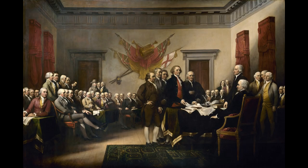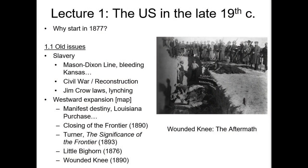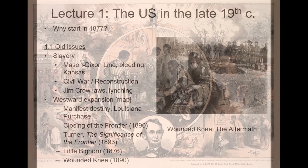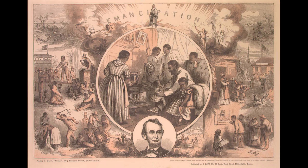Why 1877, you might ask? Why not 1876, which would have been the first 100-year anniversary of the Declaration of Independence? Well, there's a reason for it — it is the end of what is called Reconstruction in US history, meaning the period after the Civil War where Union troops occupied the south. That occupation ended in 1877, marking the beginning of a new age referred to as the Gilded Age in US history.